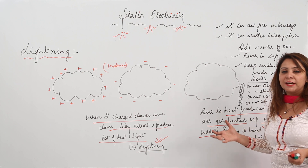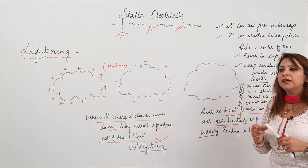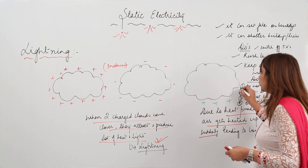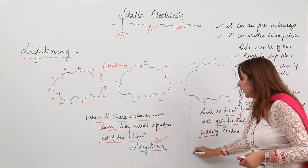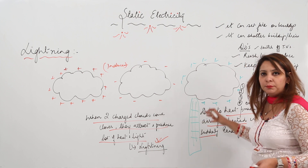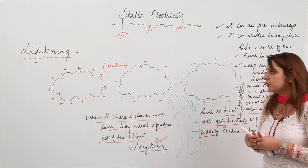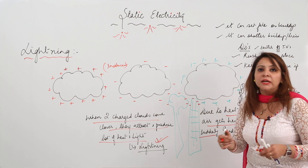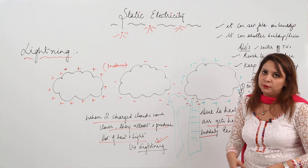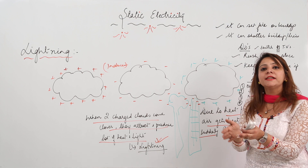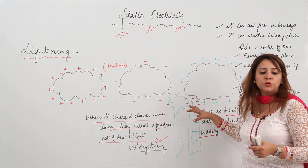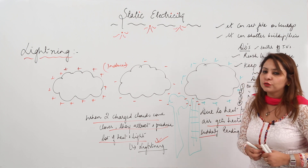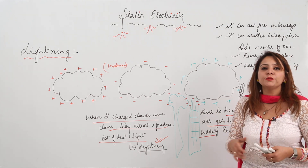Thunderstorms are very dangerous — they can shatter buildings and lead to fires. When a positively charged cloud comes closer to a tall building or a tree, it induces a negative charge on it. The charge produced can be so large that it shatters buildings and starts fires due to the large heat and light produced by the attraction between the cloud and the building.